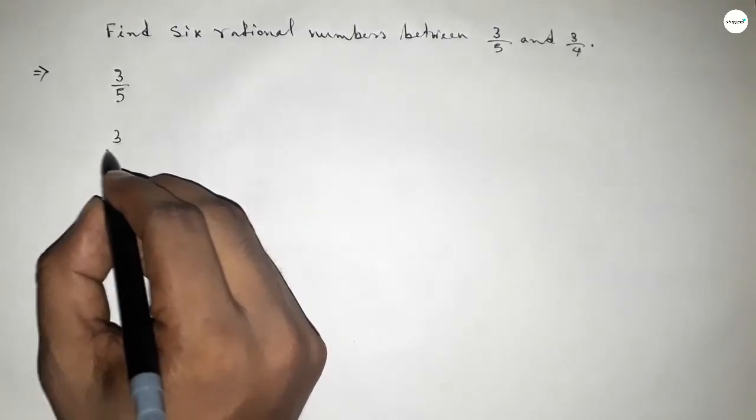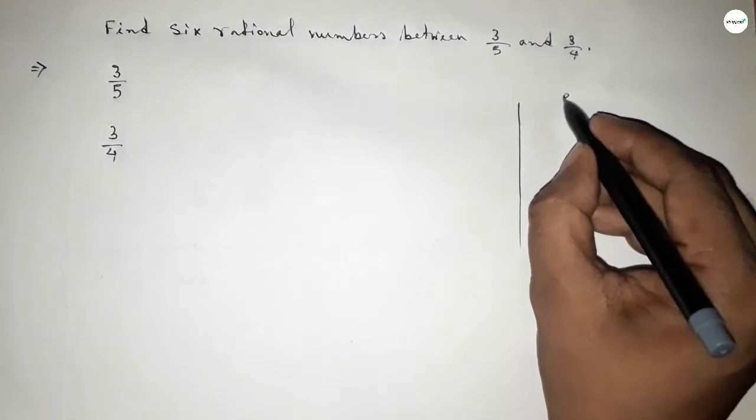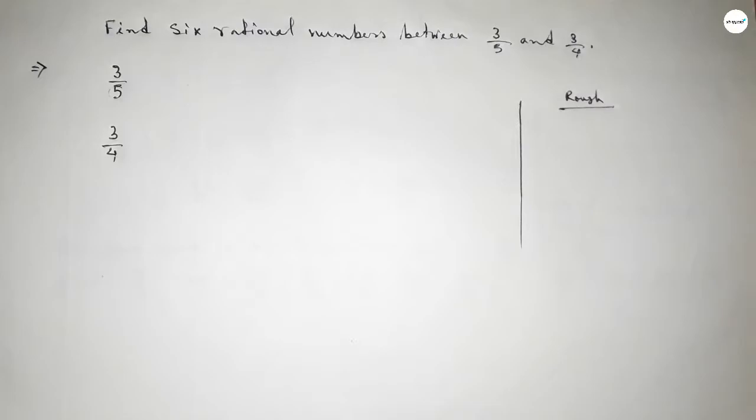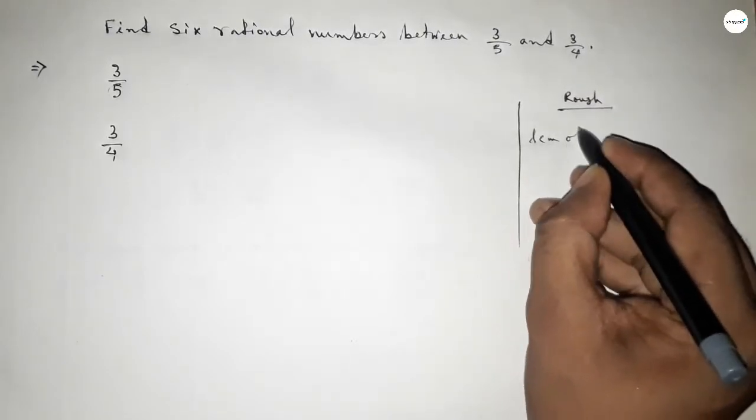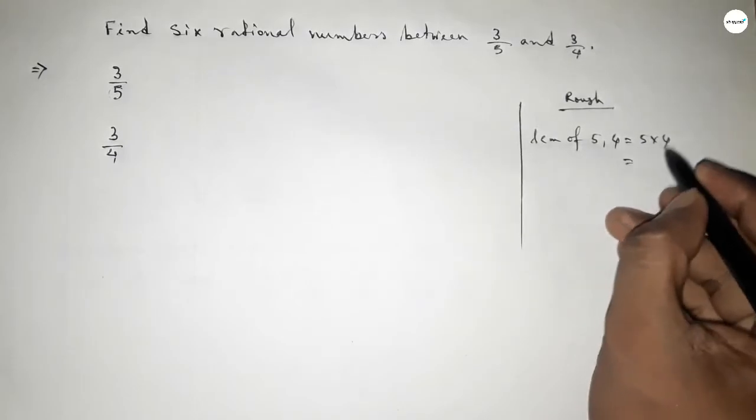Now roughly discussing some calculation here. Here the denominators of both are not equal, so we have to first find out the LCM of 4 and 5, and their product is the LCM.